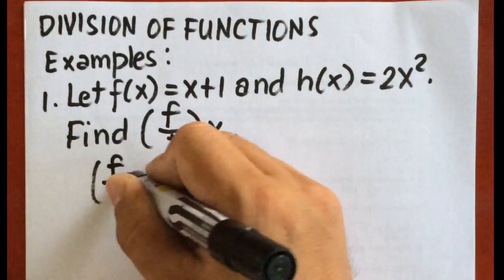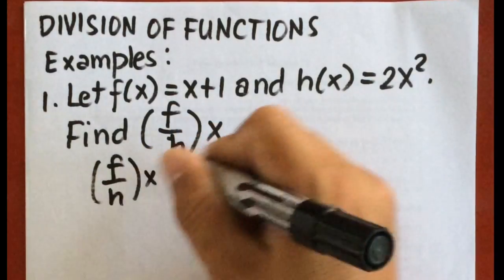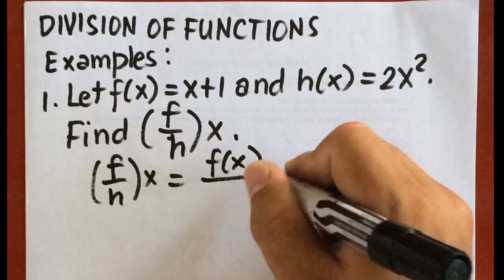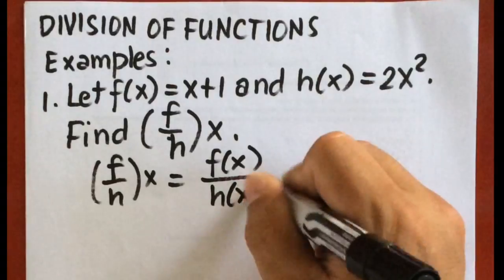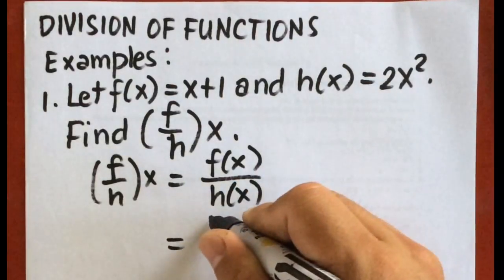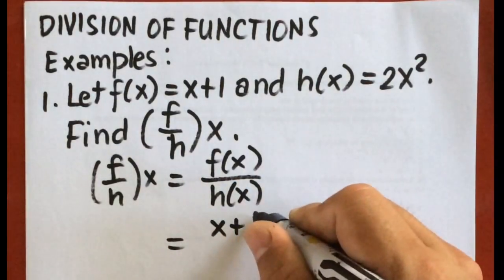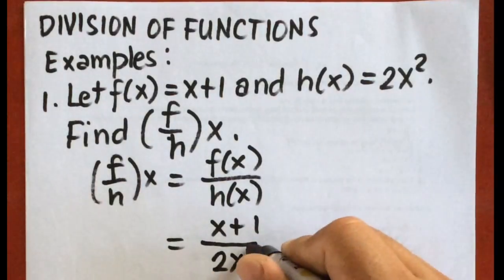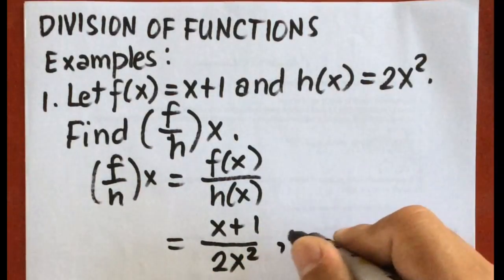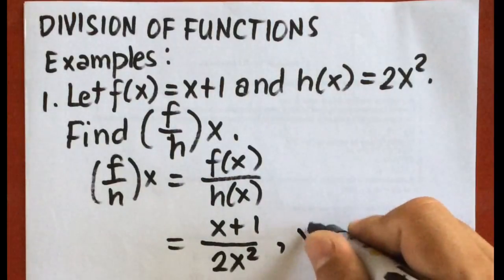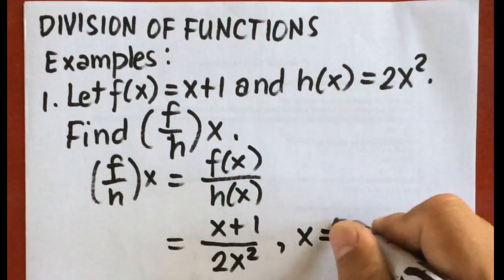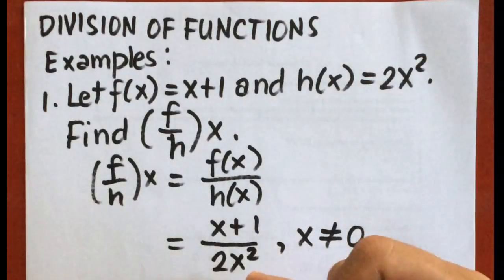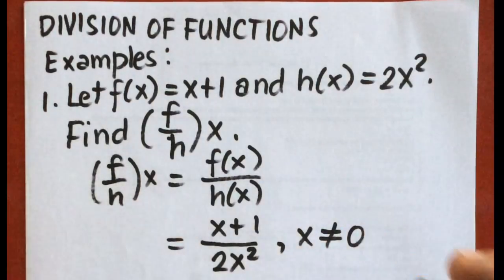So f over h of x is equal to f of x over h of x. Therefore, we're going to have x plus 1 over 2x squared, such that x here should not be equal to 0. Because if the value of x will be 0, the function will become undefined.